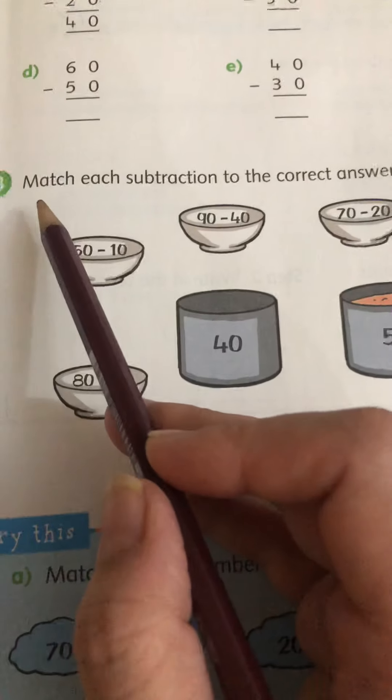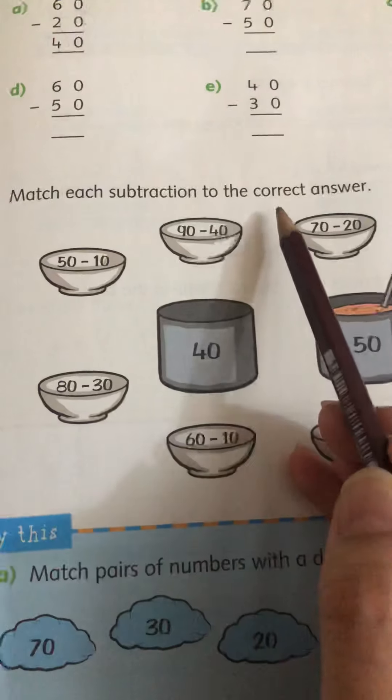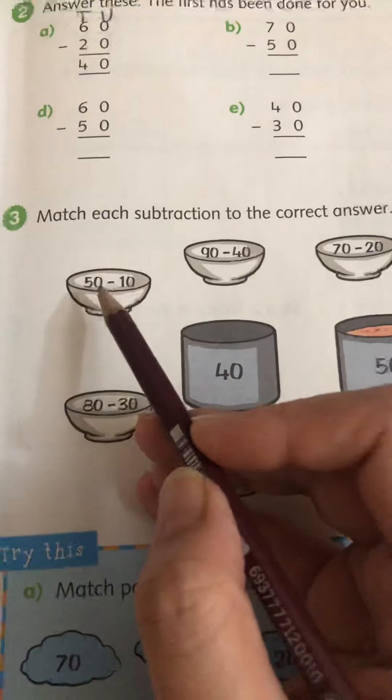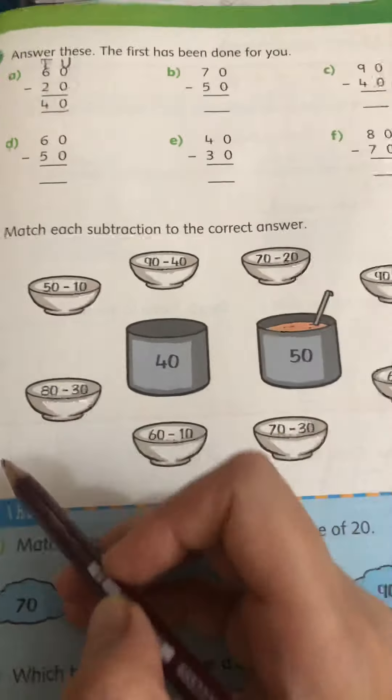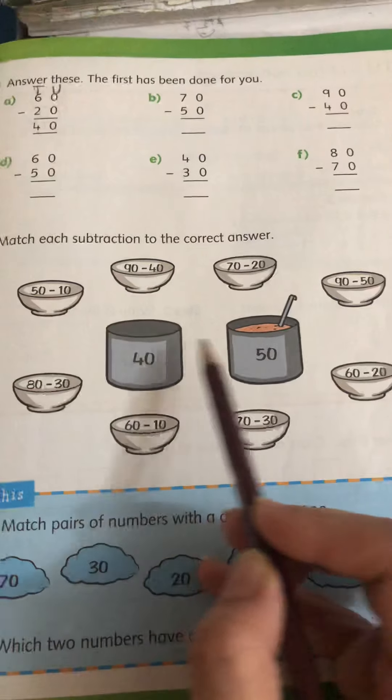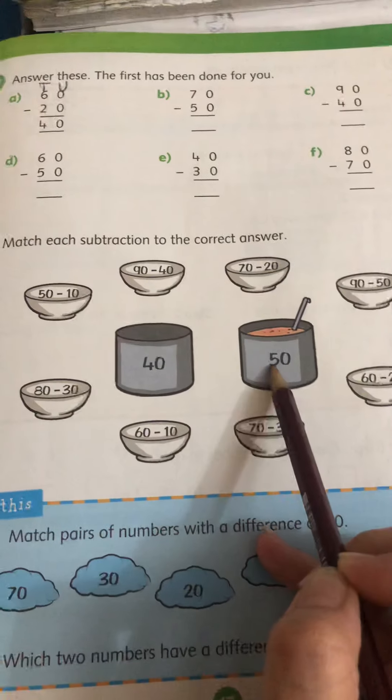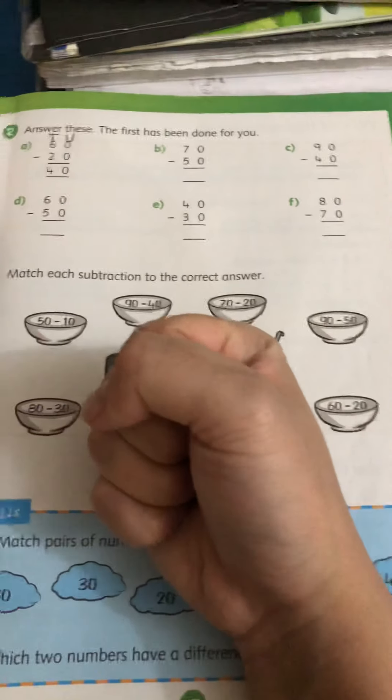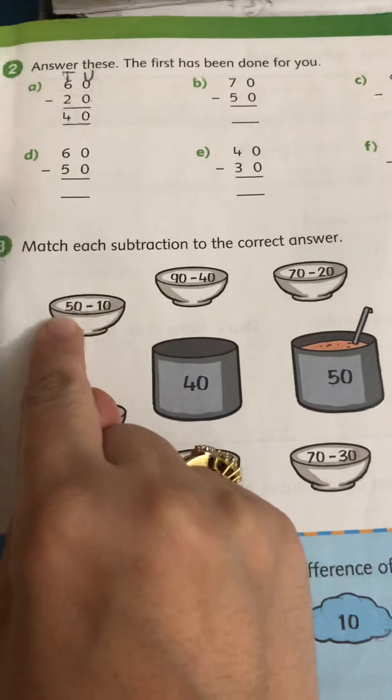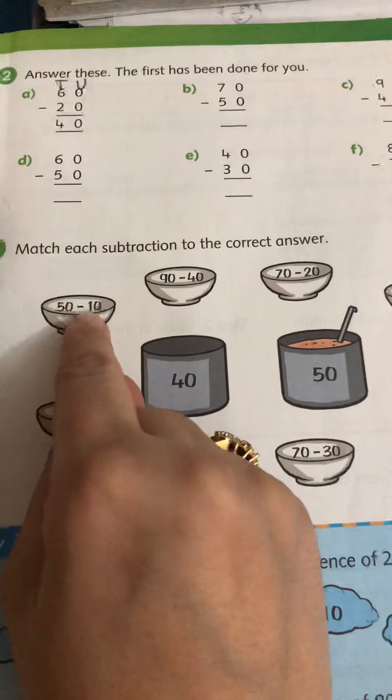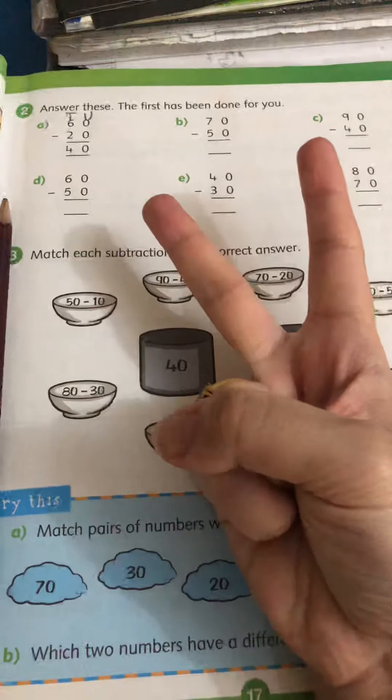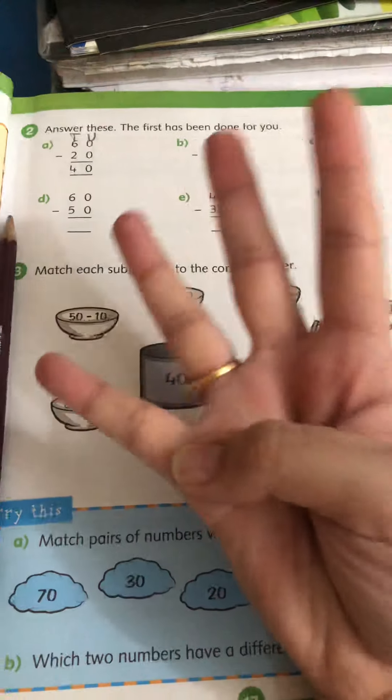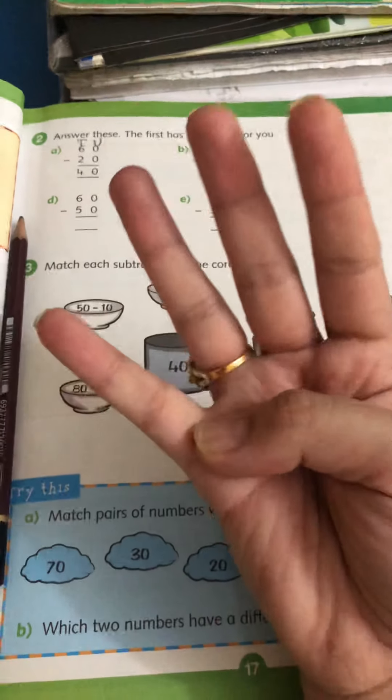Now question number 3. Match each subtraction to the correct answer. 50 take away 10. Out of these 2, 50 take away 10, can it be 50? So we will do the backward counting. Counting starting from 50, backward counting to reach 10. 40, 30, 20, 10. We are doing counting in tens.